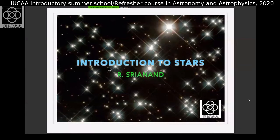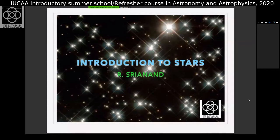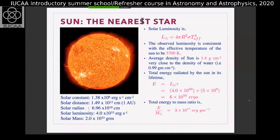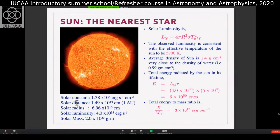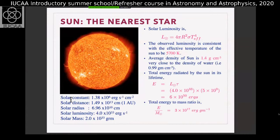To start with, we can look at what we know about the Sun. One quantity is known as the solar constant, which is nothing but the amount of energy you receive at Earth per unit area per unit time. This is a flux of the Sun received at Earth, which is of the order of 1.38 × 10^6 ergs per second per centimeter squared.